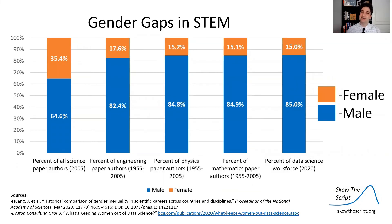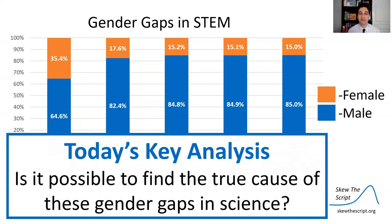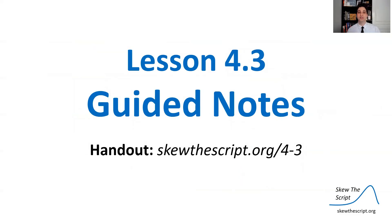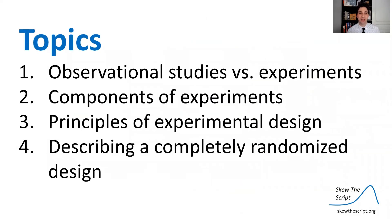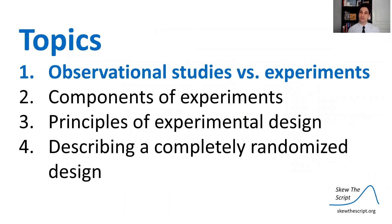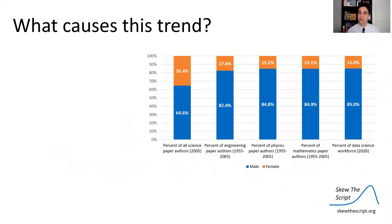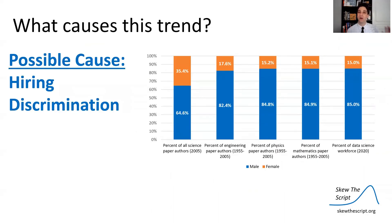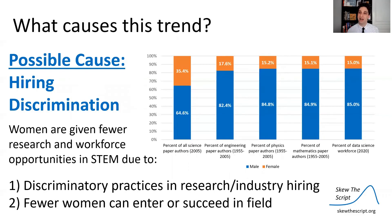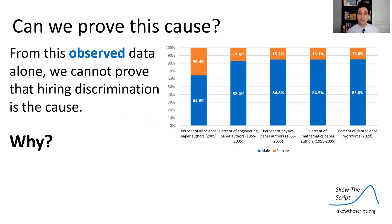We want to investigate the causes of this gap — what's driving it and how can we fix it? Today's question is: is it possible to find the true cause of these gender gaps in STEM? We'll talk about observational studies versus experiments. Correlation does not equal causation, so we need to be careful. One possible cause is hiring discrimination — discriminatory practices in research and industry hiring in STEM that cause fewer women to enter or succeed in the field.